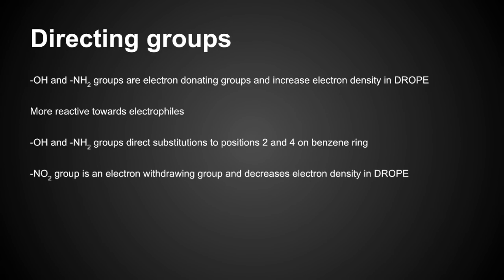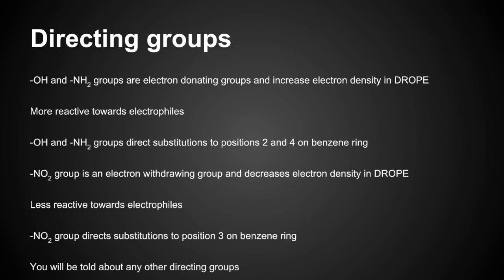The other type of directing group is the electron-withdrawing group. NO2 is specified in the syllabus, and that withdraws electron density from the delocalised ring of pi electrons, making the benzene ring less reactive towards electrophiles. These things need catalysts to help them react, and it directs to positions 3 on the benzene ring. There are other directing groups, but you will be told about them, whether they're 2, 4, or 3-directing.